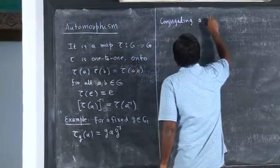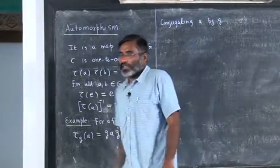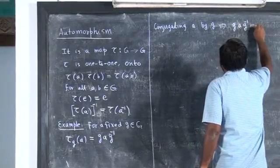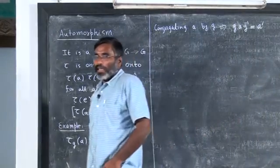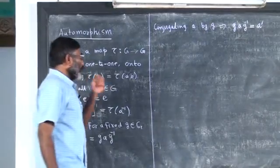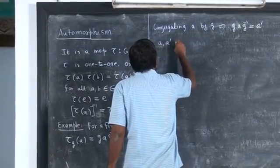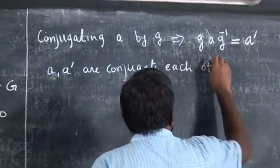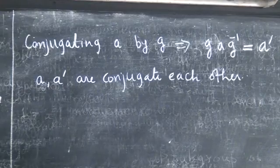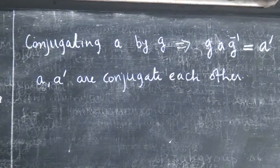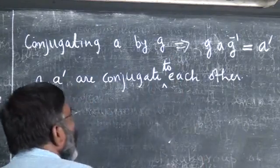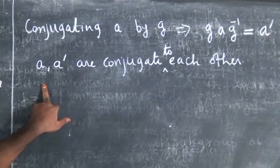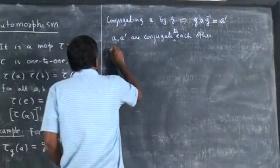Conjugating a by g is done as g·a·g⁻¹. This may give an element called a-prime. When you conjugate a by g you may get a-prime, then we say a and a-prime are conjugate to each other. Now we can ask: if I take all those elements that are conjugate to a, I can represent them as a class — so we define what is called a conjugacy class.